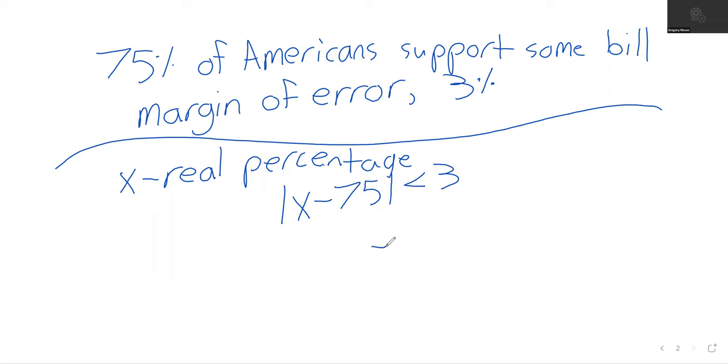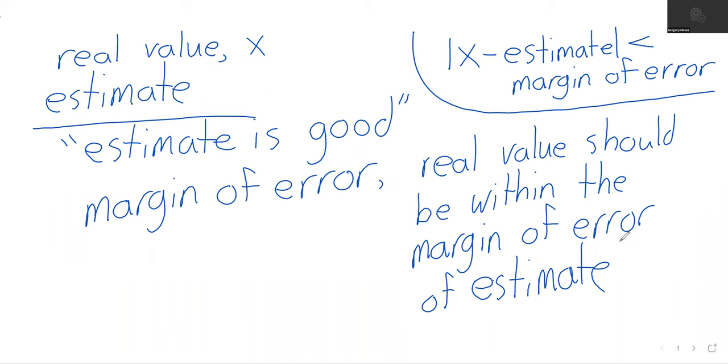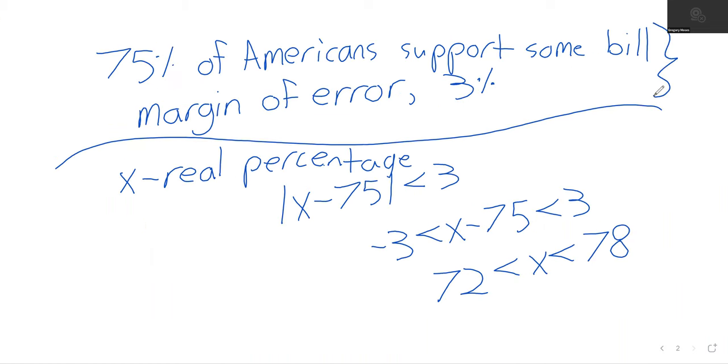And it could then be solved using the techniques we learned yesterday. Add 75 to both sides, and we think that the real value should be somewhere between 72 and 78. So this is a good thing to know. And being able to go from something like this to a mathematical statement is something I'd like you to be able to do. Because it really gets to the heart of what this absolute value inequality stuff is used for.